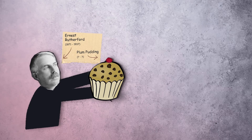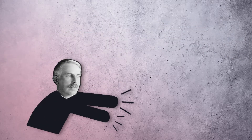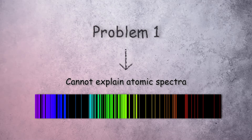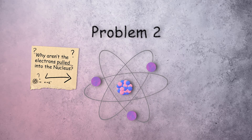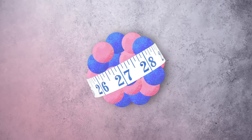In this video I'm going to talk about how Rutherford overthrew Thomson's atomic model and achieved a clearer understanding of the atom's internal structure. We'll also look at two major problems with Rutherford's new model and some of the ways he estimated the size of the nucleus.